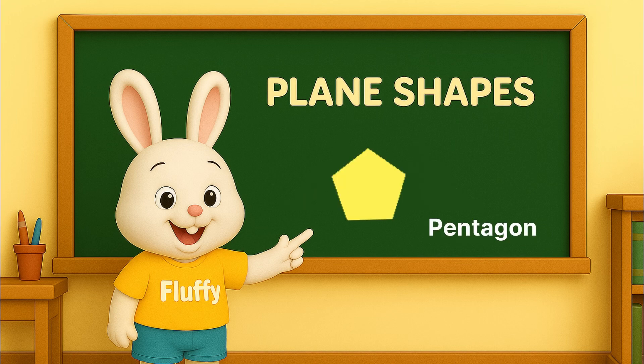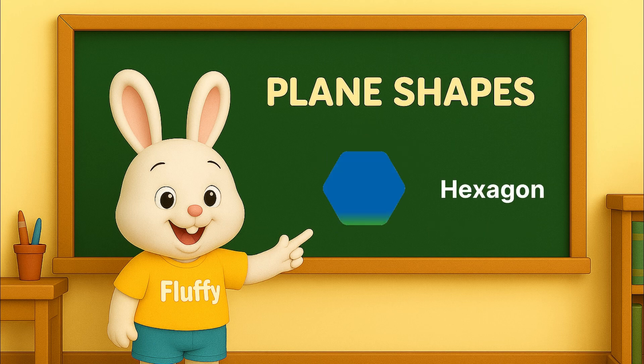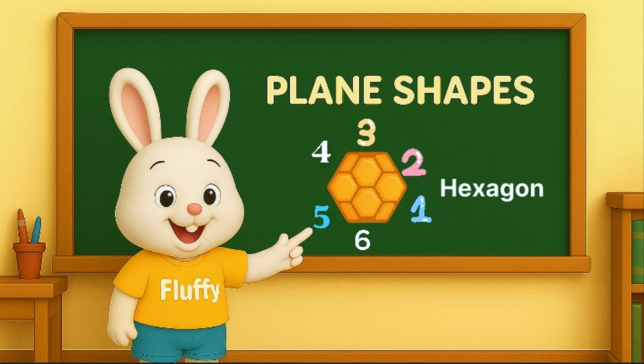Pentagon. A pentagon has five sides, like a badge. Hexagon. A hexagon has six sides, like a honeycomb.